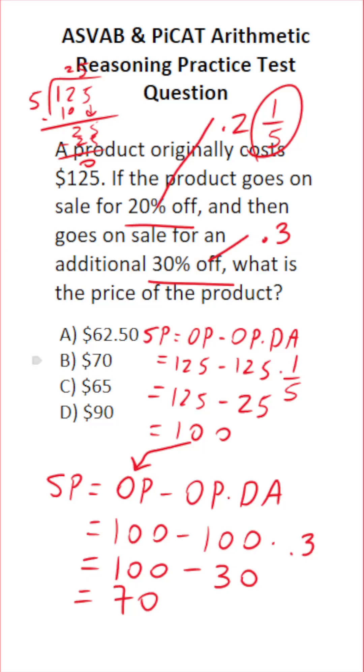So after two successive discounts, the final price of our product is $70.